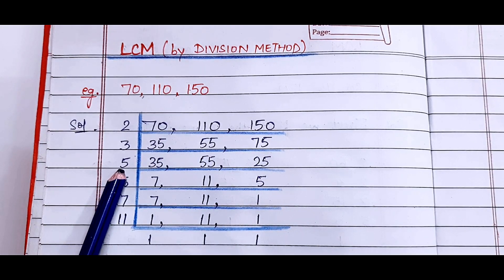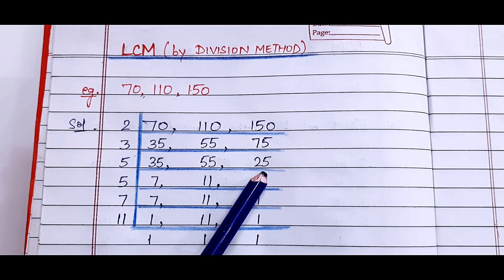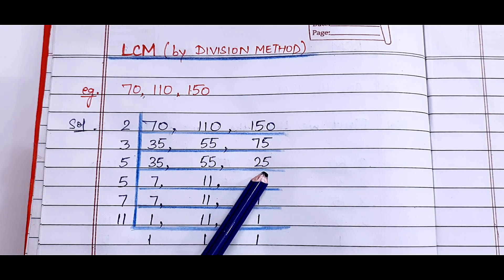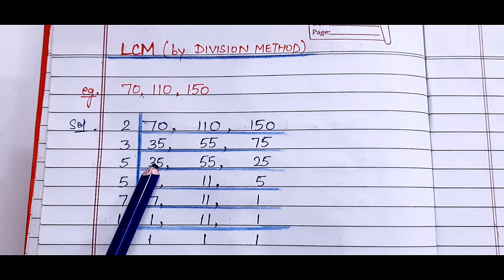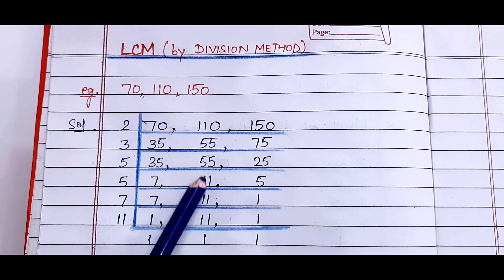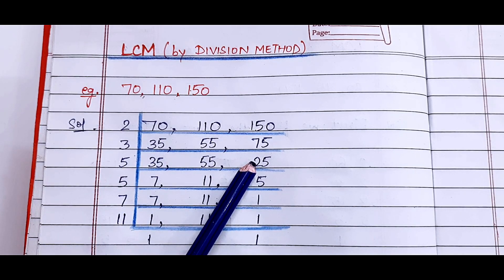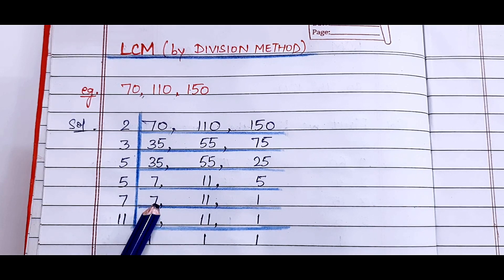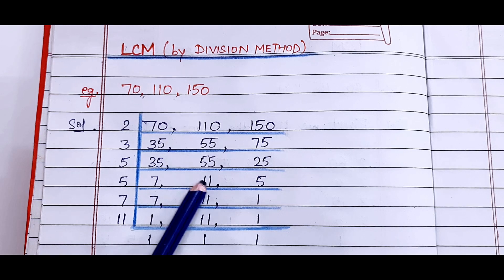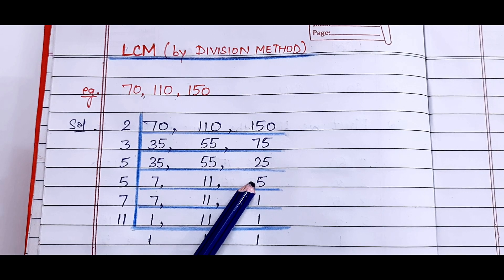Now similarly, all these numbers are divisible by 5 now. None of the numbers is divisible by 3, so we will write 5 here. 5 times 7 is 35. 5 times 11 is 55. 5 times 5 is 25. Clear? Now see, 7 is not divisible by 5, so I have written 7 as it is. Then 11 is also not divisible, so write 11 as it is. But 5 is divisible by 5. How many times?